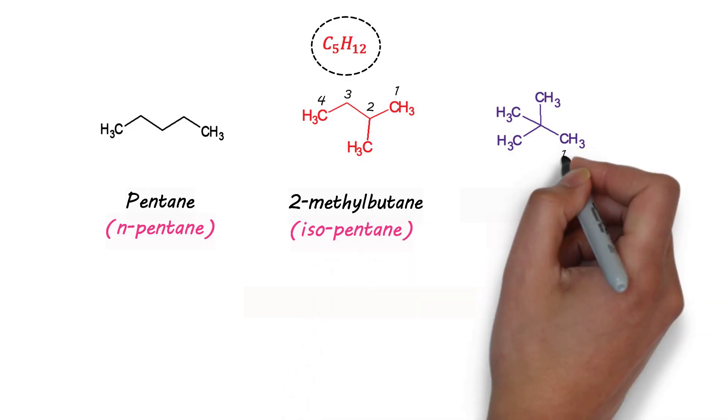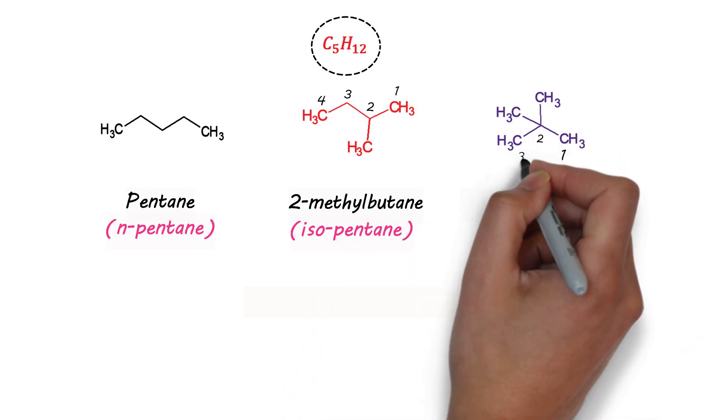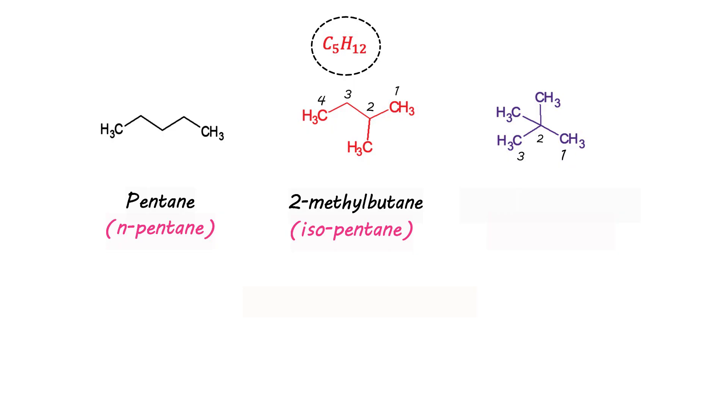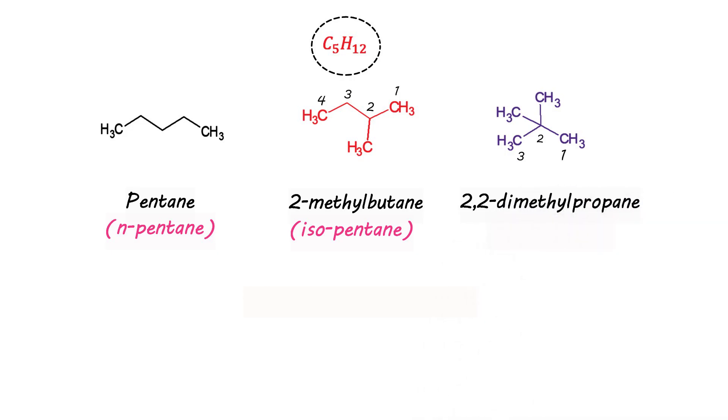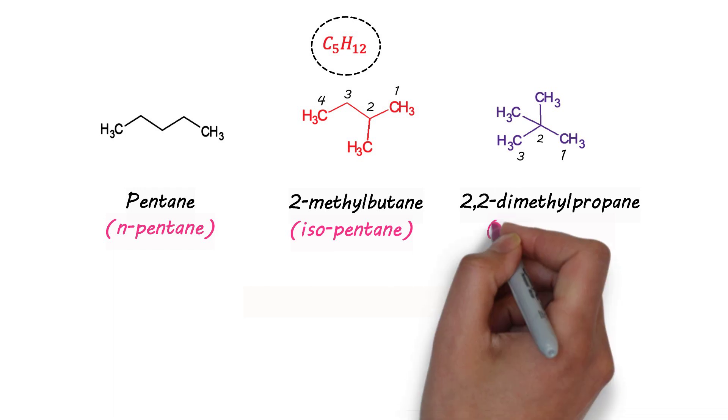In the third molecule there are two substituents, that is two methyl groups on position two. So the name is 2,2-dimethylpropane. So in the main chain there are three carbons only, that's why we have propane. So this is also called as neopentane.